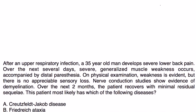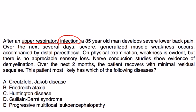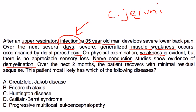And now I have a couple vignettes for you. Here we go. After an upper respiratory infection, a 35-year-old man develops severe lower back pain. Over the next several days, severe generalized muscle weakness occurs accompanied by distal paresthesia. On physical exam, weakness is evident but there is no appreciable sensory loss. Nerve conduction studies show evidence of demyelination. Over the next two months, the patient recovers with minimal residual sequelae. This patient most likely has which of the following diseases? Well, it's a perfect scenario. A person develops an infection, they don't say which one but it could be Campylobacter or other ones, and then develops this generalized weakness.